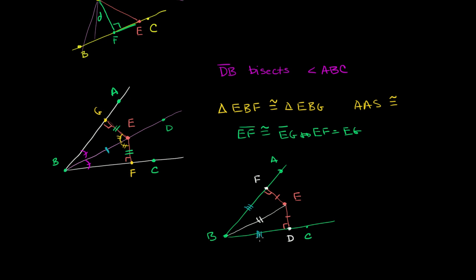Or you actually didn't even have to go there. You could have used the RSH case — where if you have a right triangle, one set of sides congruent, and the hypotenuse congruent, then you're also OK. You could use RSH to prove congruency as well. Either way, we know that triangle EBD is congruent to triangle EBF.